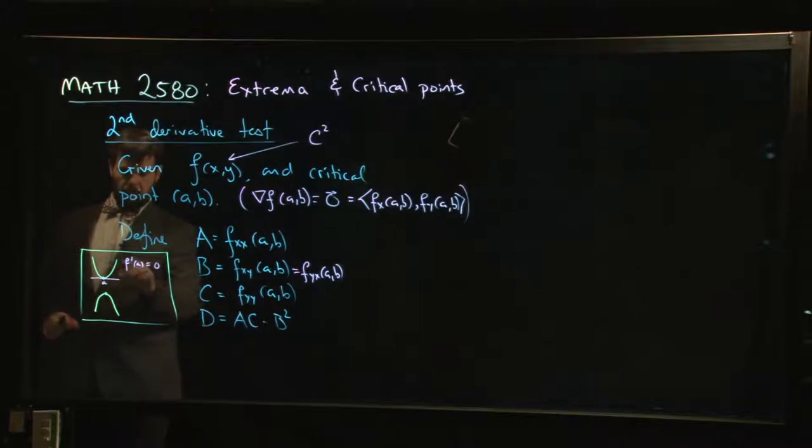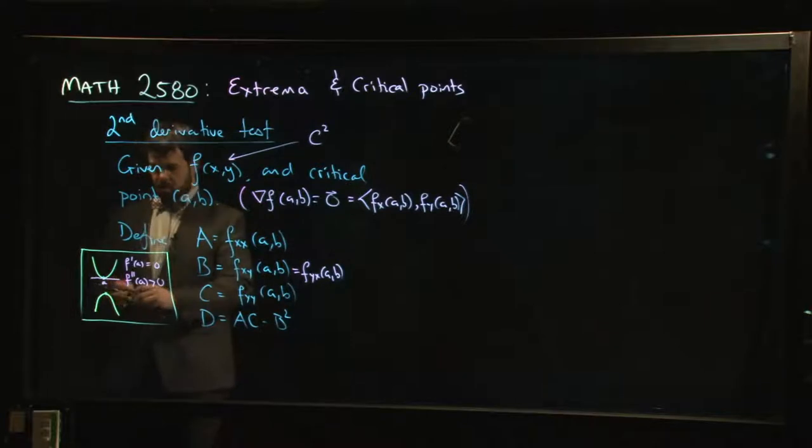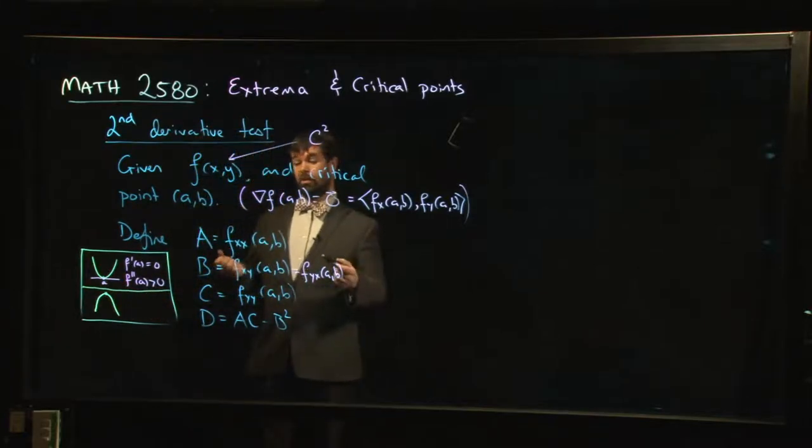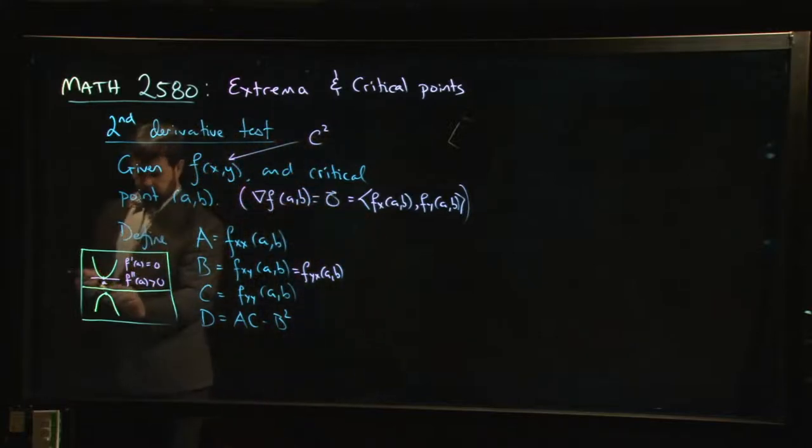But you also have a graph which is curving up. It lies above the horizontal tangent, and so that means that this graph is concave up. And concave up generally means that the second derivative should be positive. Not 100% of the time because you could be dealing with something like y equals x to the 4, where the second derivative vanishes, but it's still concave up.